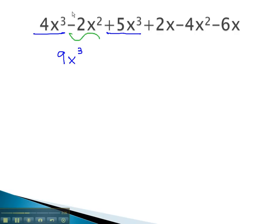Next, there's a -2x². Notice the negative stays with the number. The other x², the like term, is -4x². Adding the coefficients, -2 and -4, is -6x².